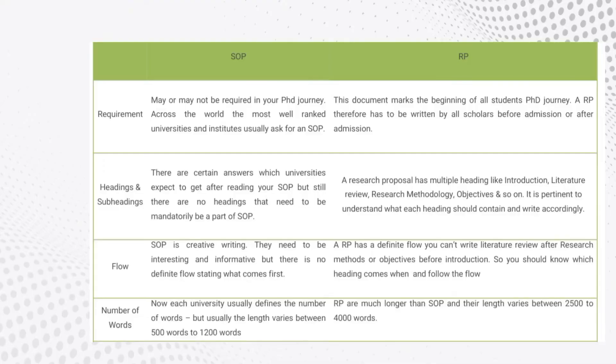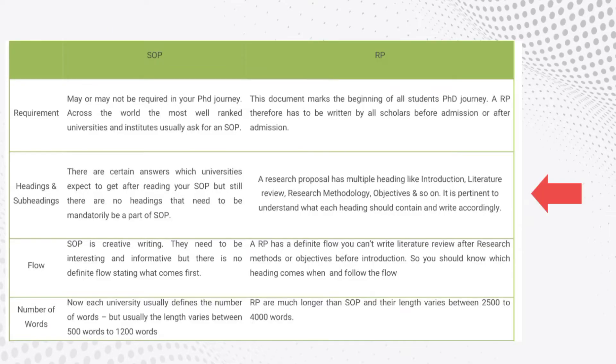The next characteristic relates to headings and subheadings. An SOP does not have any formal headings. However, the university does expect to get certain answers after reading your statement of purpose, so there are things that should and should not be included — but no defined headings. A research proposal, on the other hand, has definite headings. The entire structure is made up of headings like introduction, literature review, objectives, research methodology, research gap, and so on. Each heading has a definite meaning, and the student should know what should be written under each one.